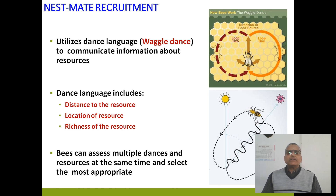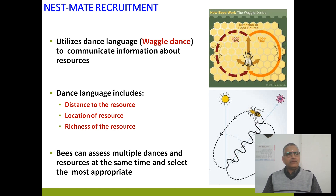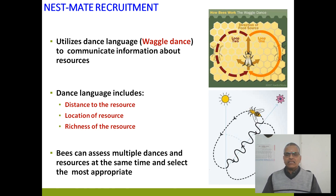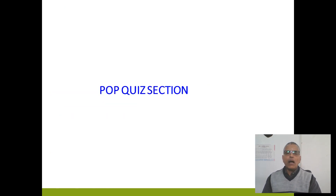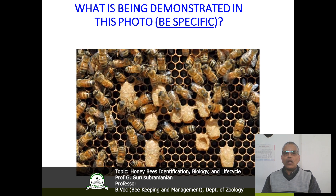Regarding nestmate recruitment: it is like a dance language — the waggle dance. It is a communication about information on resources. The waggle dance communicates to other bees the distance to the resource, the location of the resource, and the richness of the resource. Bees can assess multiple dances and resources at the same time and select the most appropriate one.